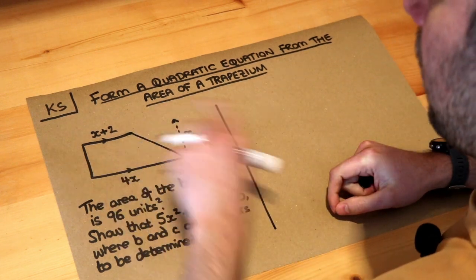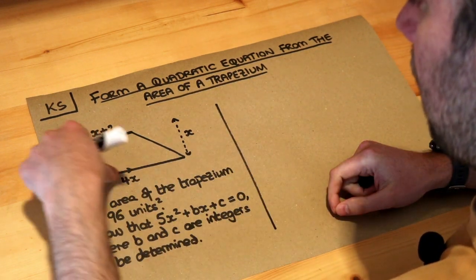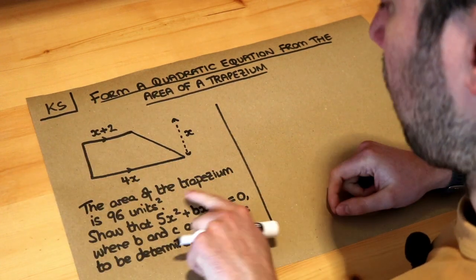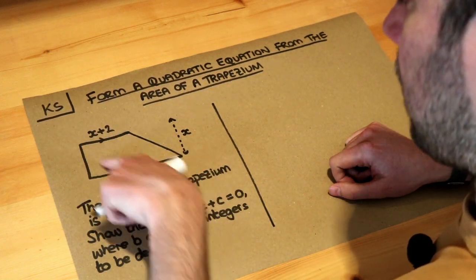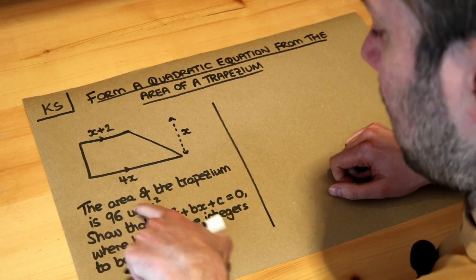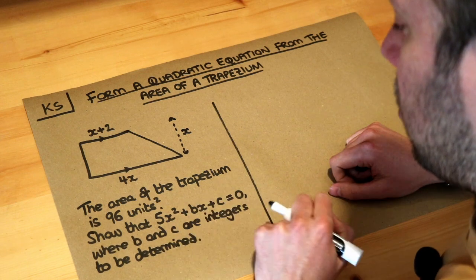So we've got a trapezium here. Remember a trapezium has a pair of parallel sides, and we're told the area of the trapezium is 96. We have to show that using these sides of the trapezium and the area, we can form this equation here.